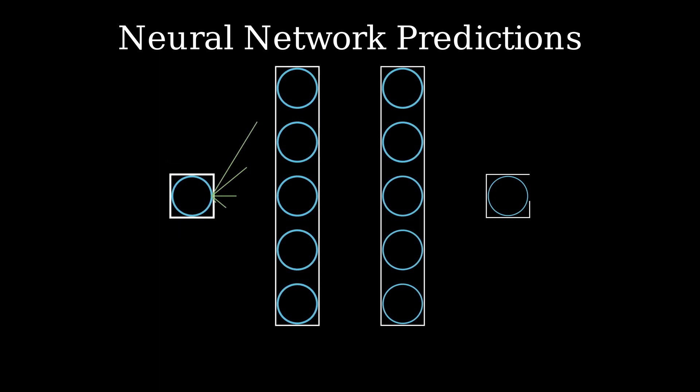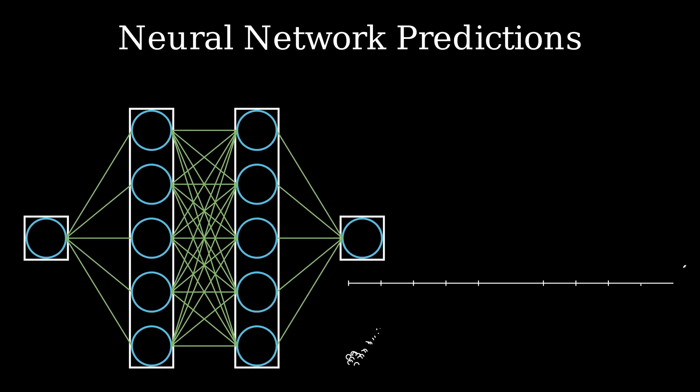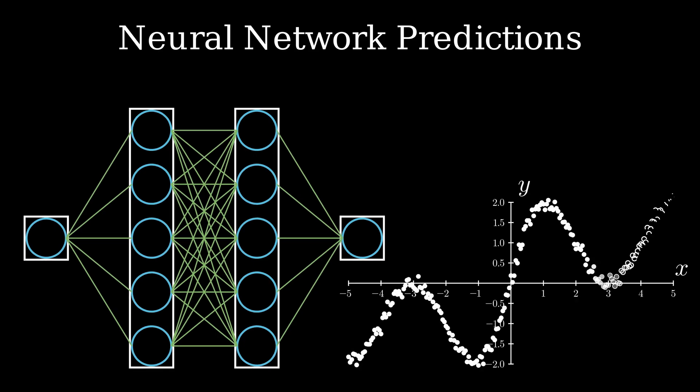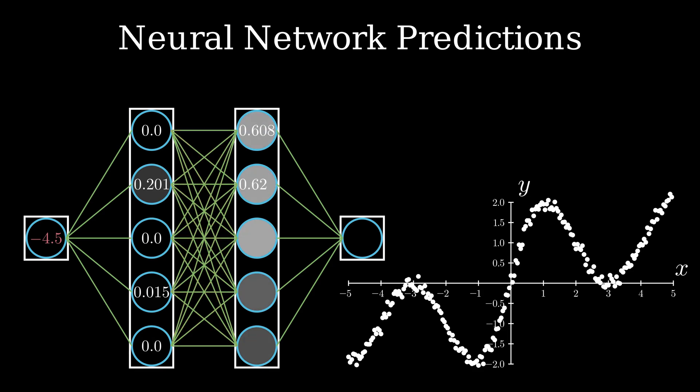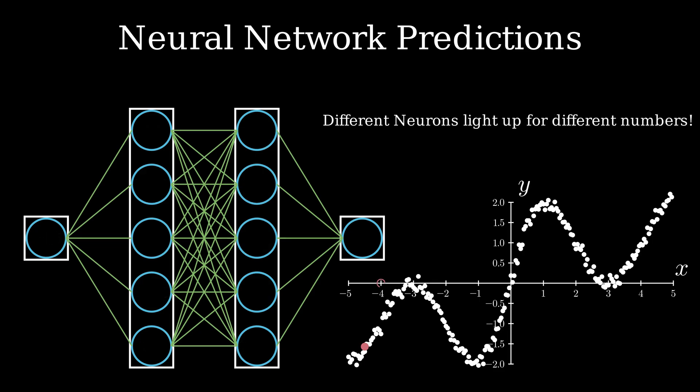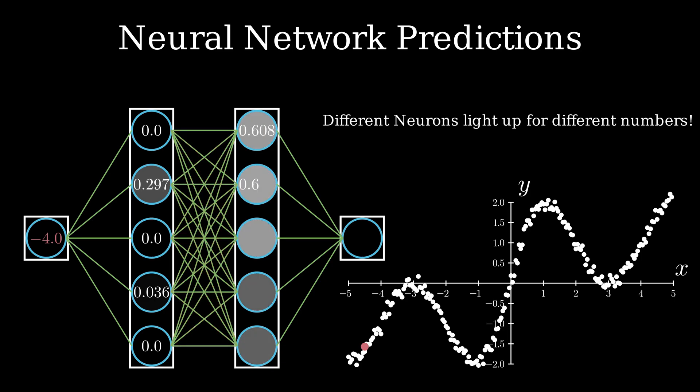So let's take a trained neural net with two layers and make predictions on this dataset using a few discrete points. By selecting x equals minus 4.5 and inputting it into the network, one can observe the neurons lighting up sequentially in the first hidden layer followed by the second hidden layer and ultimately leading to the output. The remarkable aspect is that the combination of activated neurons differ for each input number. For instance, see when I input minus 4, even though it is close to the previous value, a completely different set of neurons are activated.